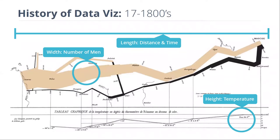What we're looking at is a depiction of Napoleon's troops marching into Moscow, and then their eventual retreat. The beige line across the top, going from left to right, represents the number of troops — when it is wider, we have more men, and when it is narrower, we have fewer men. The black line underneath, going from right to left, represents the retreat. So already we have this really brutal, devastating story of what happened to these men.